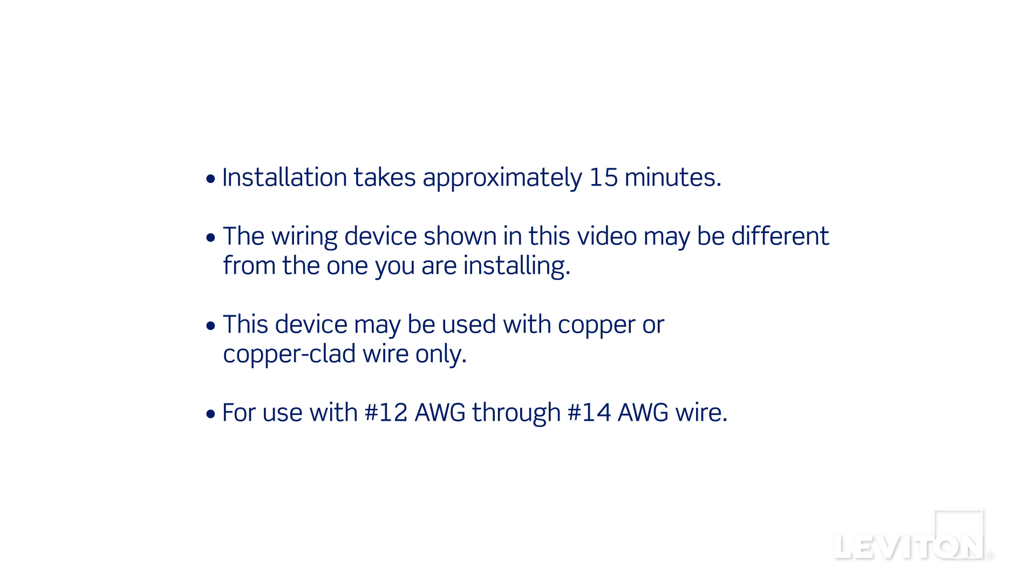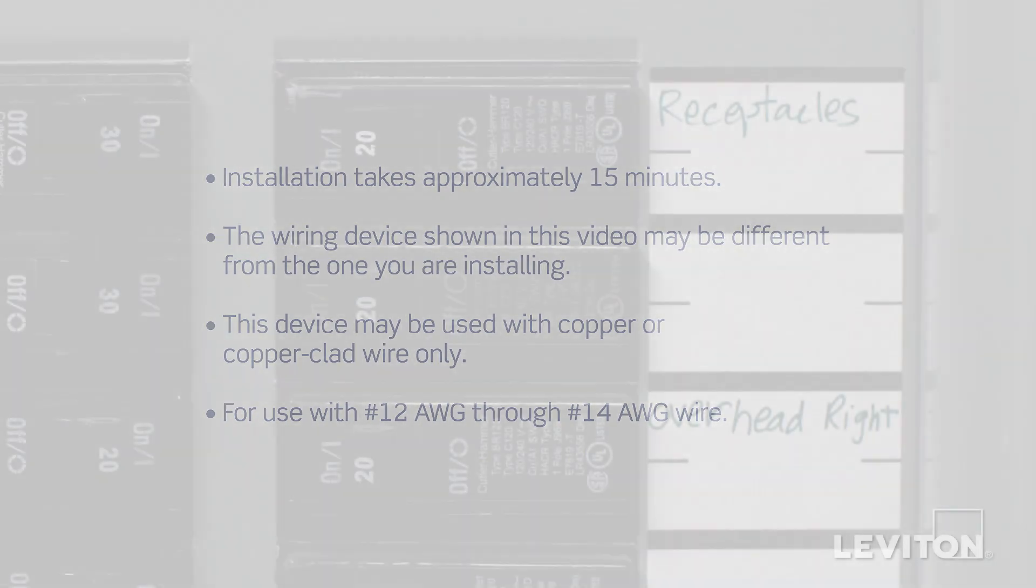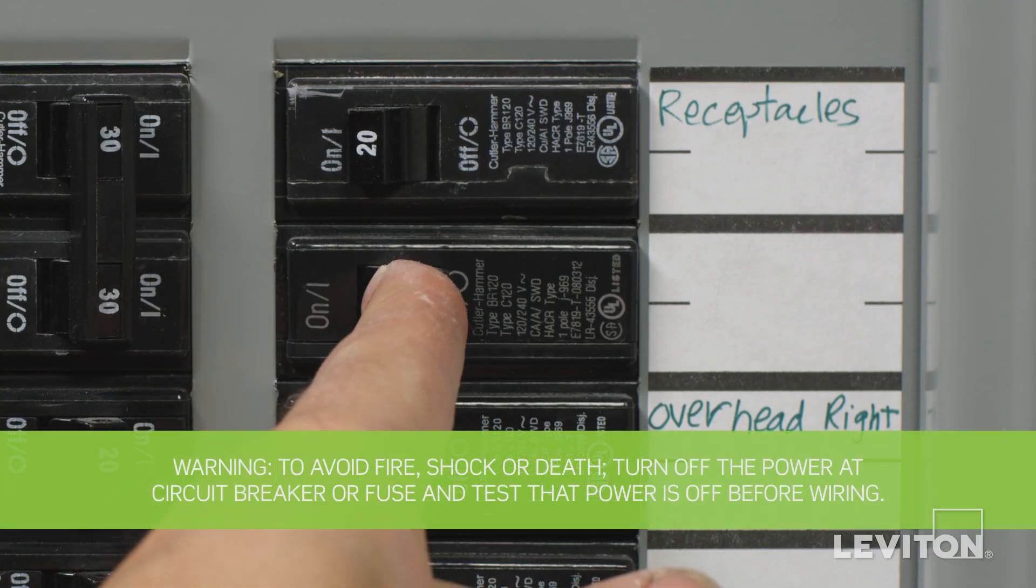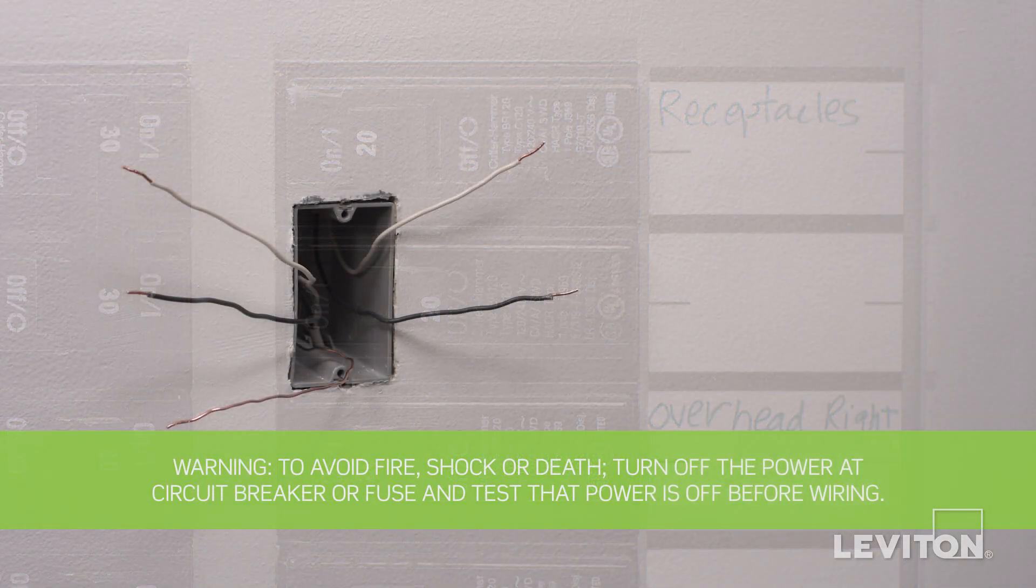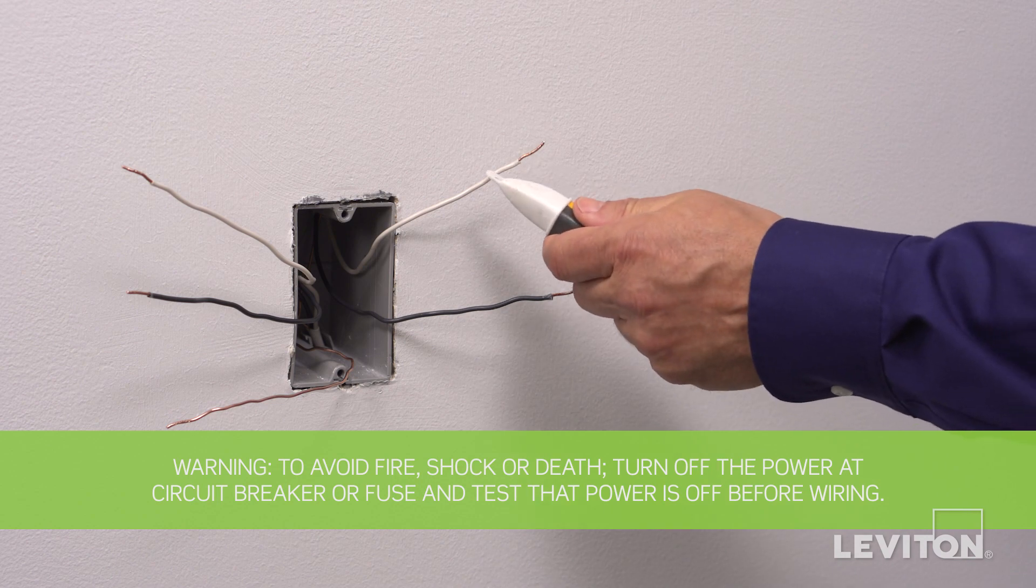The process shown follows general guidelines. Local codes take precedence. Be sure to turn the power off at the circuit breaker and use a voltage tester to ensure that the power is completely off.